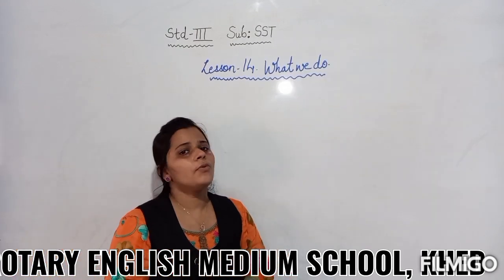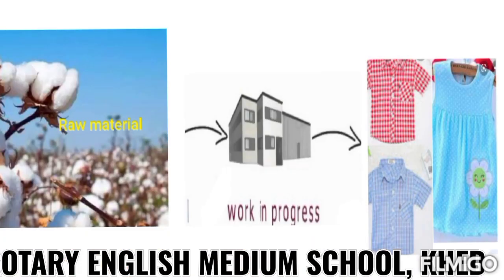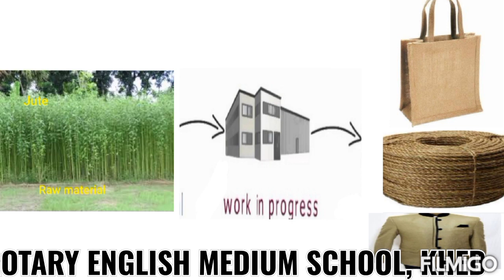The clothes you wear — from where do they come? We get them from cotton crops. These cotton crops are sent for the making process, and after the making process, it finally comes to the finished product — the cloth. You can see here in the images. And then these clothes are sent to the market, and we purchase from the market.